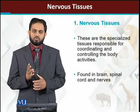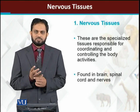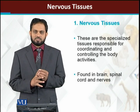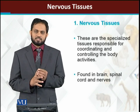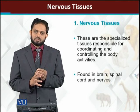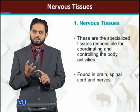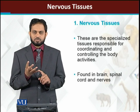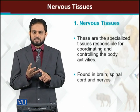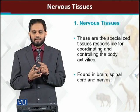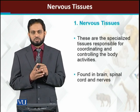There are four major types of tissues. The last one, and the important one, is nervous tissues. The four major types are: epithelial tissues, muscle tissues, connective tissues, and nervous tissues.